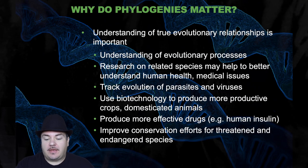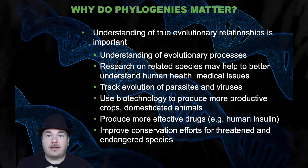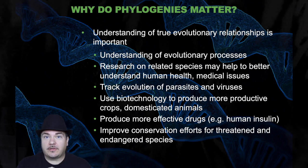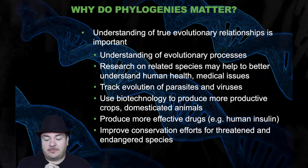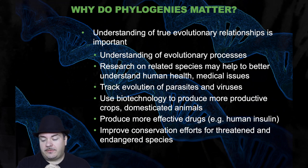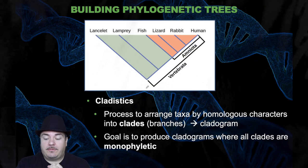Why do phylogenies matter? Understanding true evolutionary relationships is important. It helps us understand the evolutionary process, and research on related species may help us better understand human health and medical issues — those are called model organisms. We can also use phylogenies to track evolution of parasites and viruses, use biotechnology to produce more productive crops and domesticated animals, produce more effective drugs like human insulin, and improve conservation efforts for threatened and endangered species.